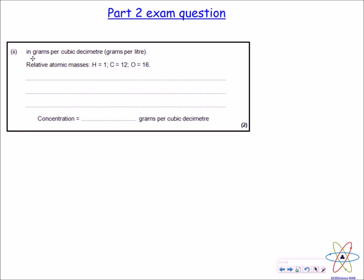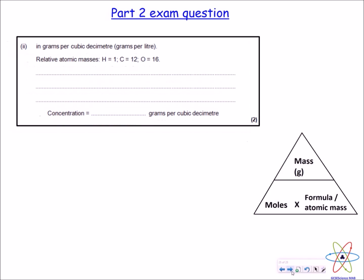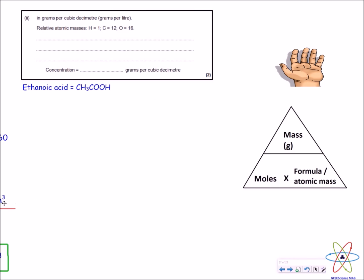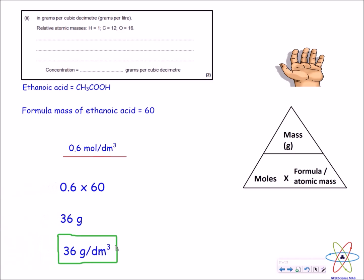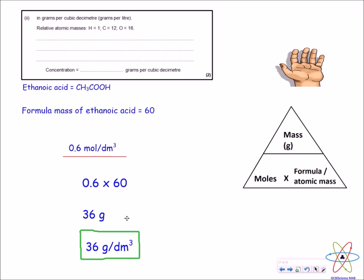Part 2 asks us to work out the concentration of ethanoic acid in grams per decimetre cubed. We use mass = moles × formula mass. From the previous question, moles = 0.6. The chemical formula of ethanoic acid is CH₃COOH, which gives a formula mass of 60 using the provided relative atomic masses. So we do 0.6 multiplied by 60, giving 36 grams. Since this is per decimetre cubed, the answer is 36 grams per decimetre cubed.